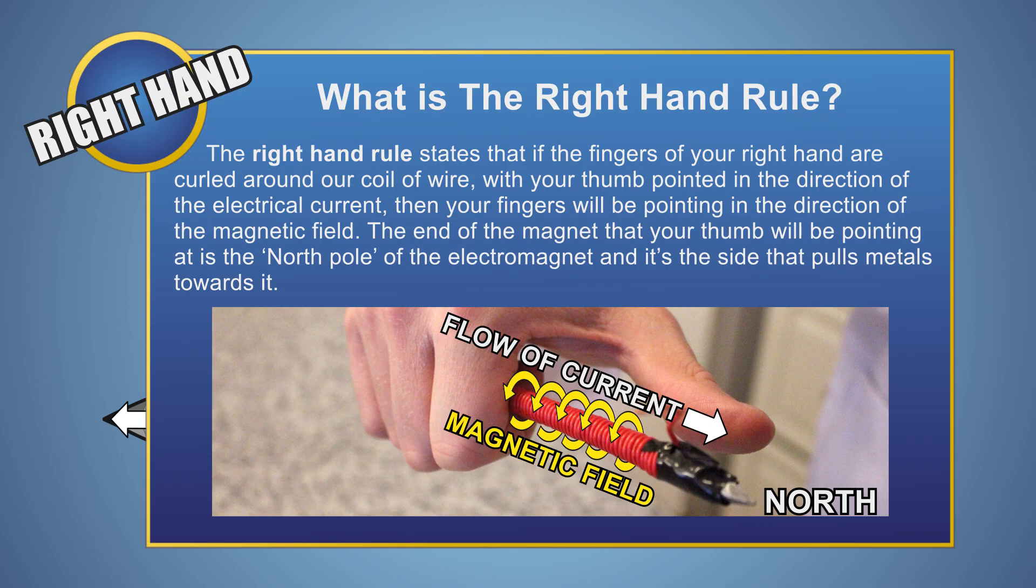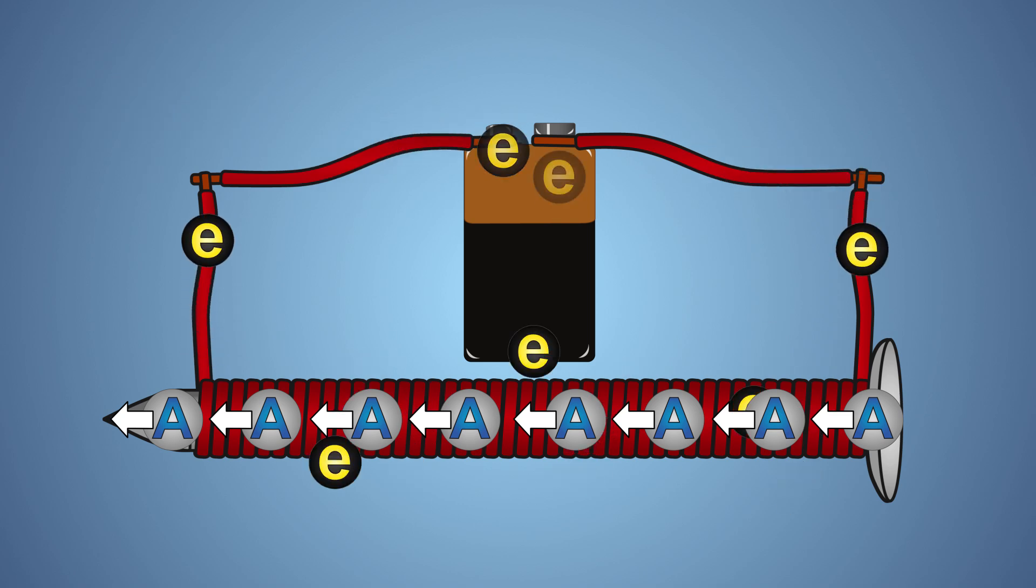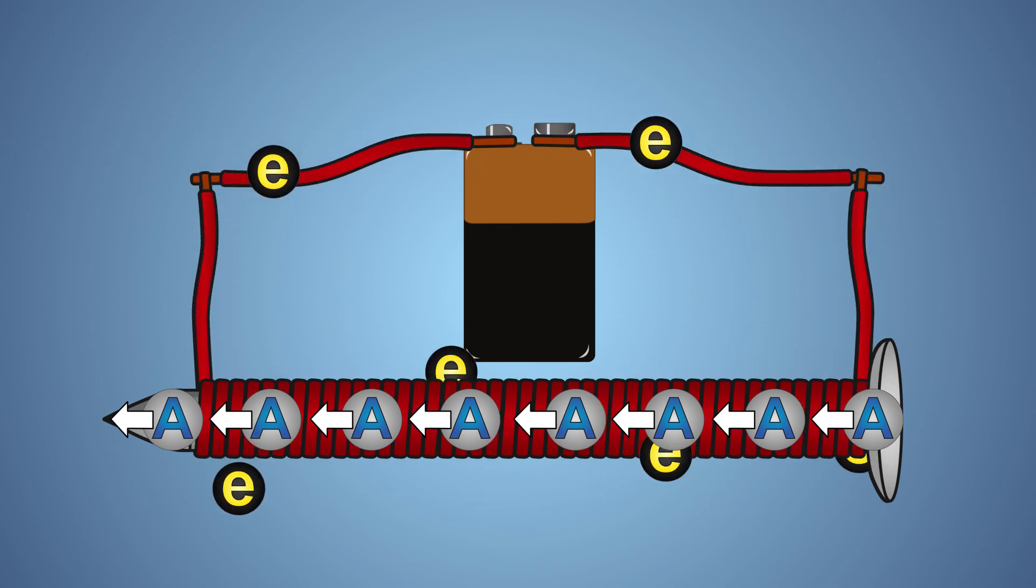The right-hand rule states that if the fingers on your hand are curled around the coil of wire with your thumb pointing in the direction of the electrical current, then your fingers will be pointing in the direction of the magnetic field. The end of the magnet that your thumb will be pointing at is the north pole of the electromagnet, and it's the side that pulls metals toward it.